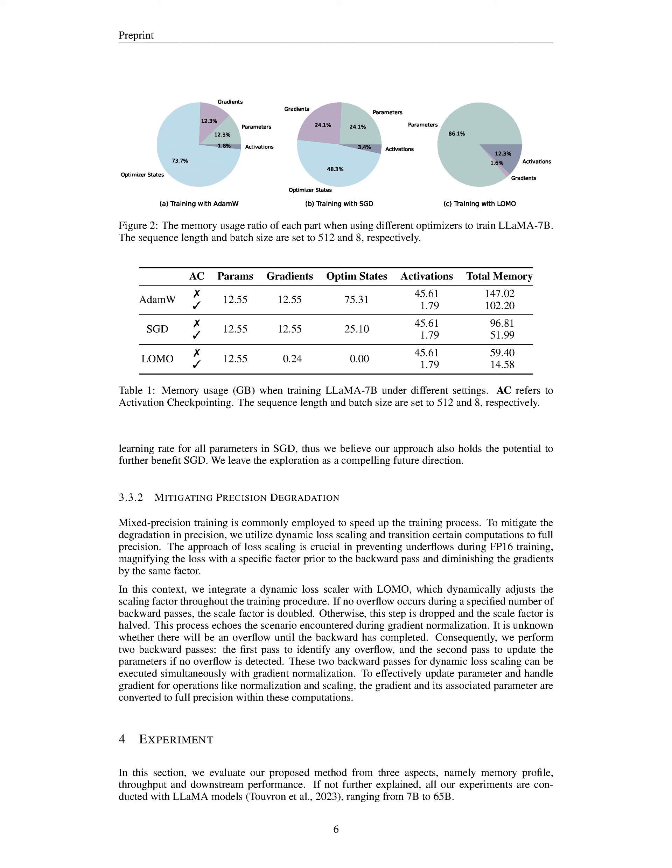If we don't experience an overflow after a certain number of backward passes, we double the scaling factor. However, if an overflow does occur, we skip this doubling step and instead halve the scaling factor. This technique mirrors the challenges faced during gradient normalization: we don't know whether an overflow will occur until after we've completed the backward pass. As a result, we conduct two backward passes — the first pass to detect any overflows, and if no overflow is found, we proceed with the second pass to update the model parameters.